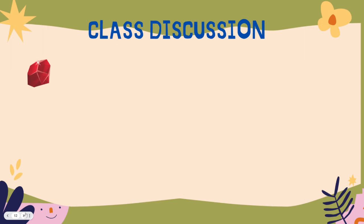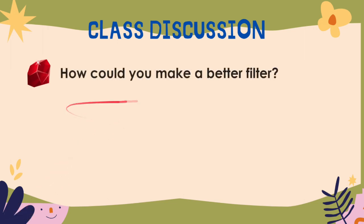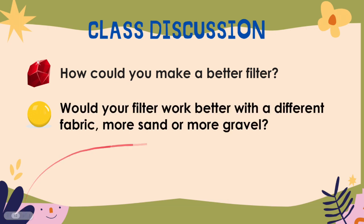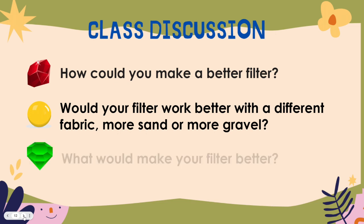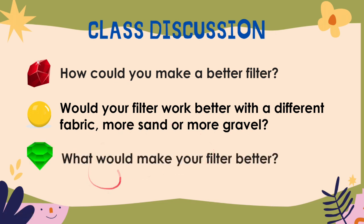How could you make a better filter? We are going to make a layered filter — we can use different layers to make a filter to clean water. Would your filter work better with a different fabric, more sand, or more gravel? Sand and gravel make good water filters because they form permeable layers. When the sand particles are next to one another, there are tiny spaces between them. Water can pass slowly through these tiny spaces and some of the dirt particles get trapped. Filters with large sand layers will be more effective but will let the water through more slowly.